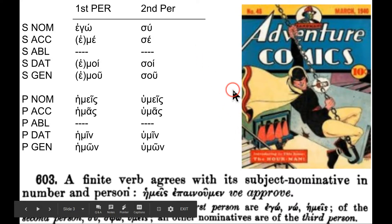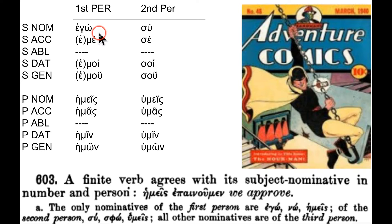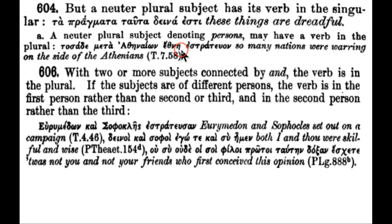First, we have to remember subject-verb agreement. First person singular only goes with first person verbs: ego. Second person singular only goes with second person singular verb forms: su. Hemes plural nominative only goes with first plural. Humaice only goes with second plural. A neuter noun, however, can take the verb in the singular. When two or more subjects are connected by 'and,' the verb is in the plural. When the subjects are different persons, the verb is in the first person.